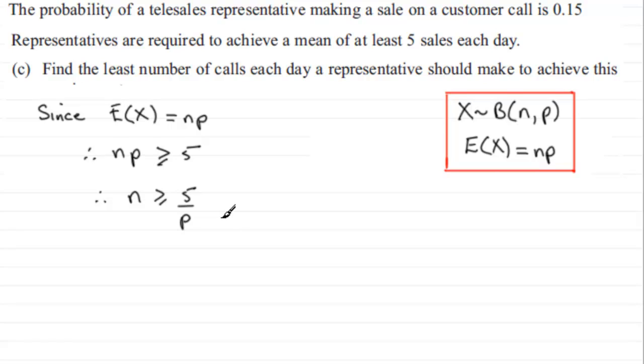Okay, we can say but p equals 0.15, so therefore what we have got then is that n has got to be greater than or equal to 5 divided by 0.15. And if you work that out, it turns out that therefore n is greater than or equal to 33 and a third, or 33.3 recurring.